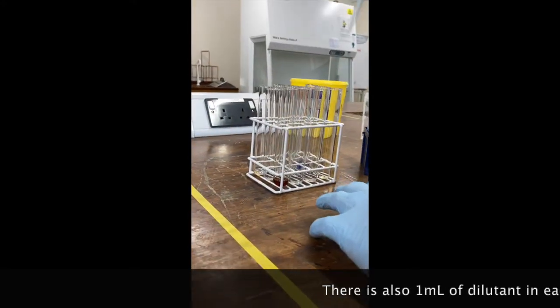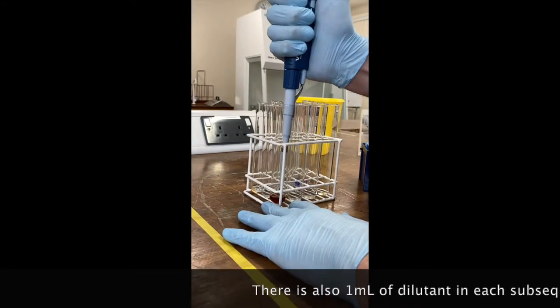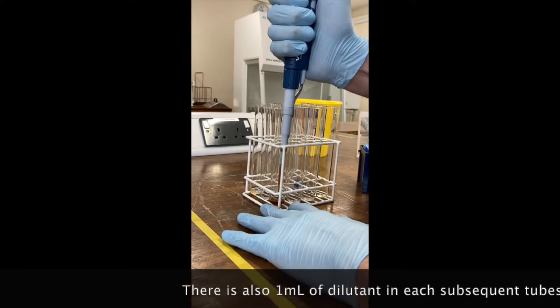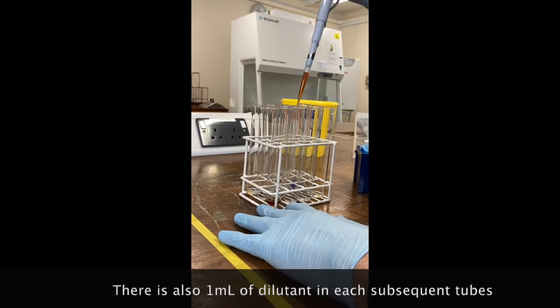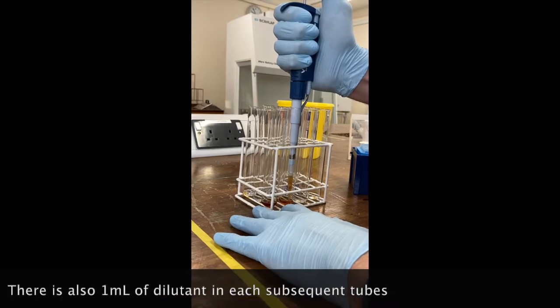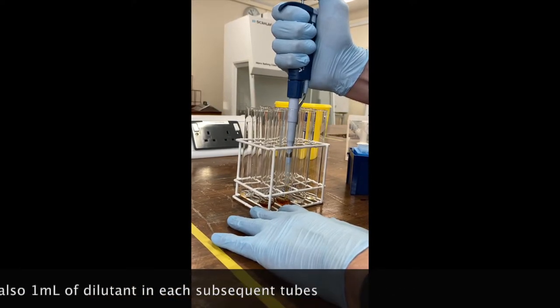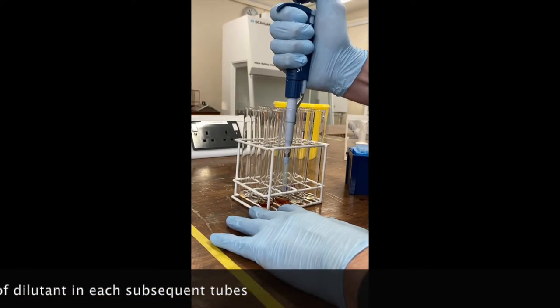Put the pipette on, go down, I'm going to take one mil up, making sure there's no air bubbles in the pipette. I'm just going to mix that by pipetting up and down gently into the second tube.